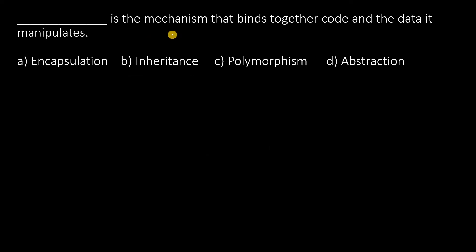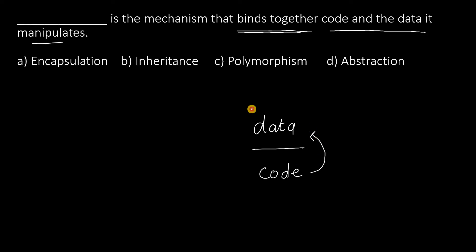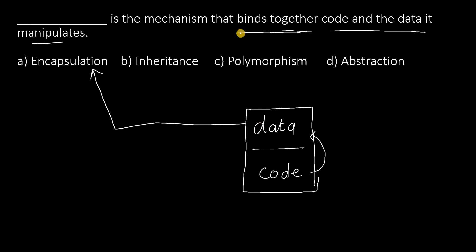Next one: dash is a mechanism that binds together code and the data it manipulates. See here, we have data and code that operates on this data. Whenever we combine these two things, this is called encapsulation. The term 'binds' is very important — binding means encapsulation.